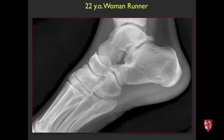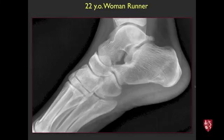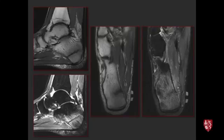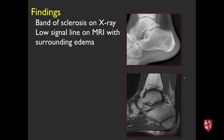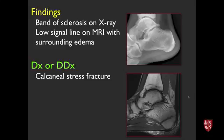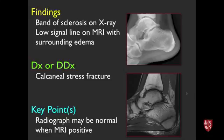Next case, 22-year-old woman runner with heel pain. Radiographs show a band of sclerosis; MRI shows a low-signal line with a lot of surrounding edema on T2-weighted images. This is a calcaneal stress fracture. Key point: radiographs may still be normal when MRI is already abnormal — MRI is much more sensitive. When radiographs do show positive findings, they show a band of somewhat ill-defined sclerosis from callus along the trabeculae.